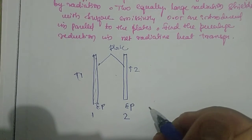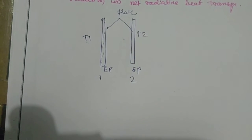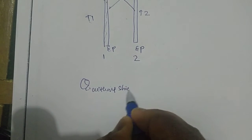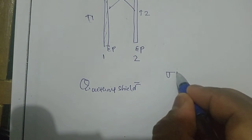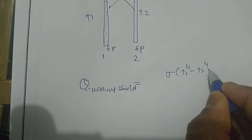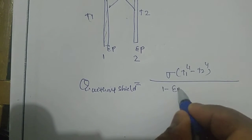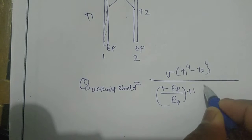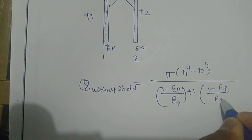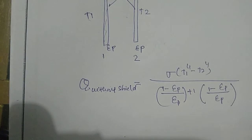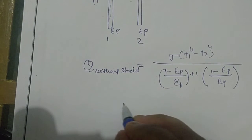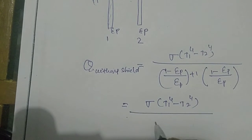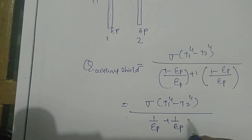For the first case, without shields, the heat transfer equation is: Q = σ(T1⁴ - T2⁴) divided by the summation of (1 - εP)/εP terms. This simplifies to σ(T1⁴ - T2⁴) divided by 1/εP + 1/εP - 1.